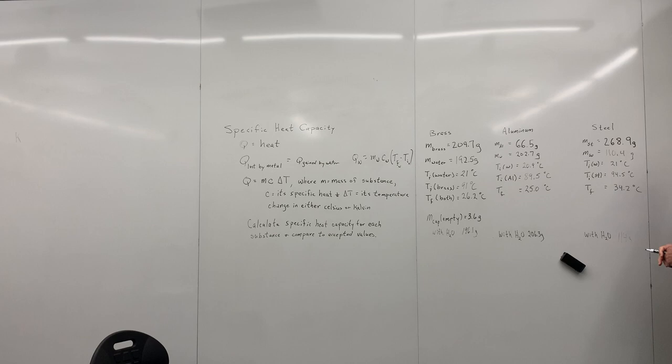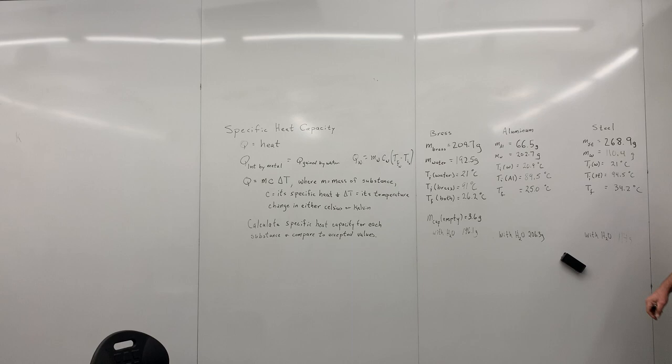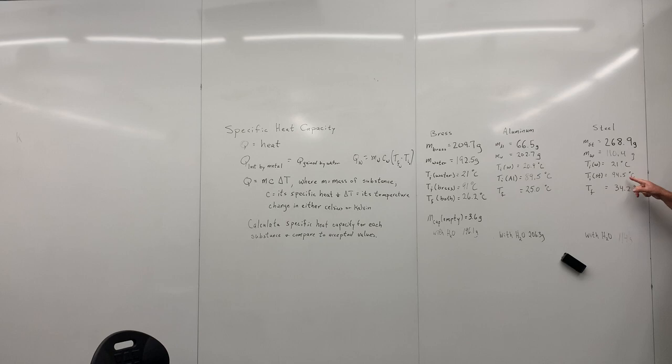And then finally, the steel, initial mass, I mean, the mass of the steel was 268.9. The mass of the water, we were able to use less water because the aluminum and the brass were those cylinders we used last week. They're fairly tall. The steel was some washers that we have and they're fairly short. So we didn't need to put as much water in the cup. So we only had 110.4 grams of water. Again, the initial temperature of the water was 21 degrees. The initial temperature of the steel was 94 and a half. And the final temperature was 34.2. And you can see we got a pretty good increase here compared to the others because we had a lot less water, more steel, and also a slightly higher temperature on the steel. So the final temperature here was 34.2 degrees.